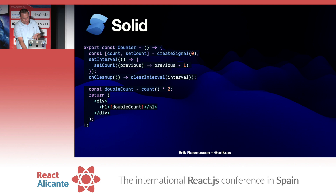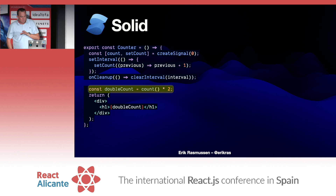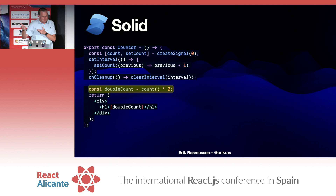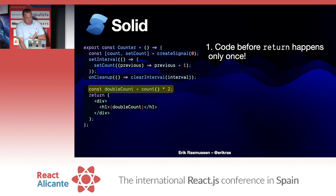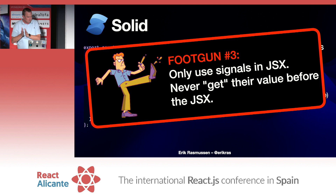So now that we know this, what's wrong with this code? This is a very common mistake for beginners in Solid coming from React. Because everything before the return only happens on mount, we're only doing this calculation once — so when the count changes, the double count is still going to remain the same. Foot gun number three: you should never get the value of a signal before your JSX. Only use signals in JSX and never get their value before the JSX.